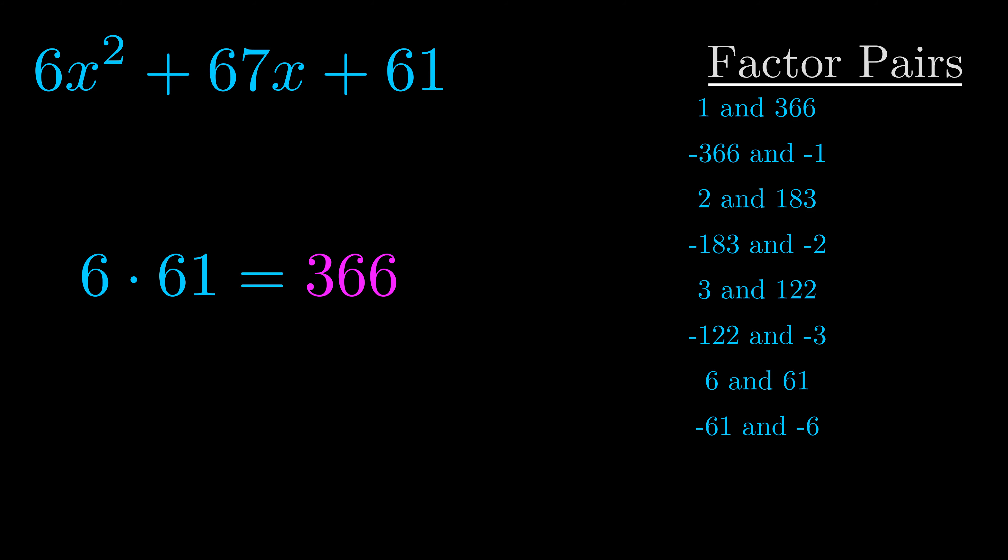The b value is the coefficient on the x term. That's the middle term, the one that we haven't done anything with yet. And really this is the only factor pair that we need.